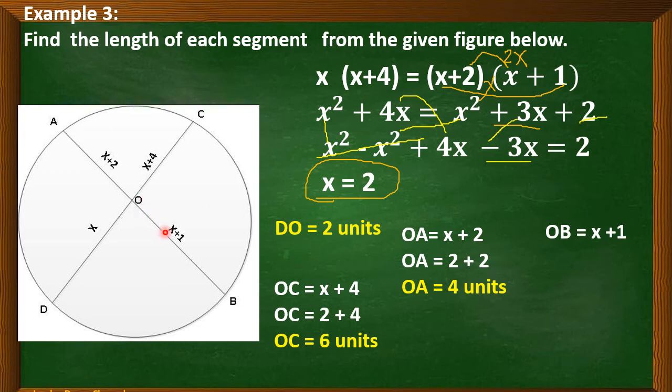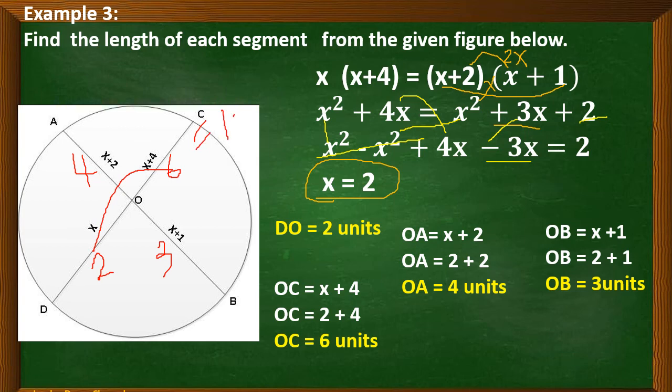And last, for line segment OB, represented by X plus 1. We have 2 plus 1, that is equal to 3. So if we will be checking their product: DO is 2, OC is 6, OA is 4, and OB is 3. Let's check. 2 times 6, that is equal to 12. And 4 times 3, that is also equal to 12. So they are equal, meaning our answer is correct because we were able to have an equal answer once we multiply the value of each segment.